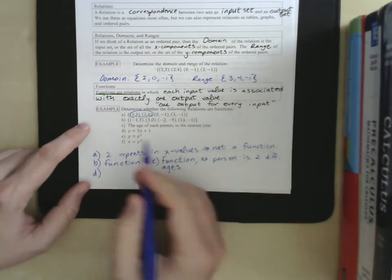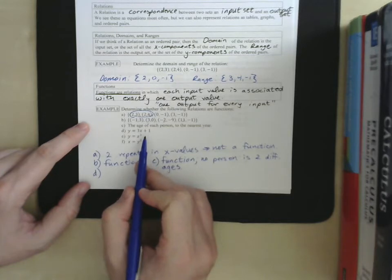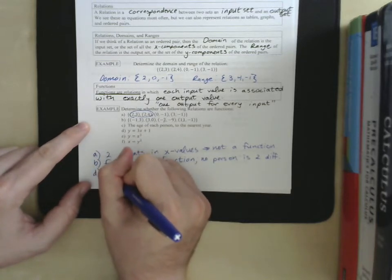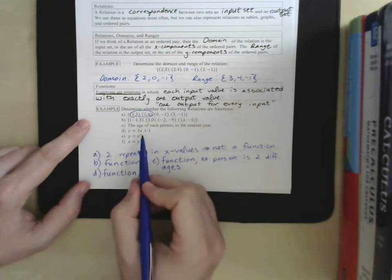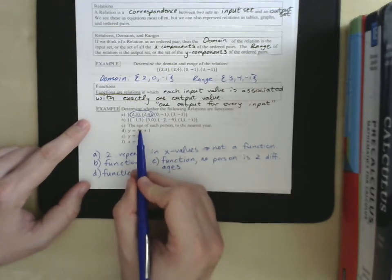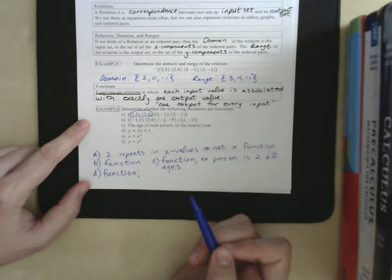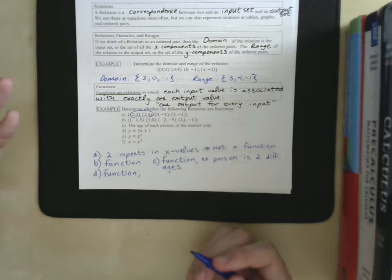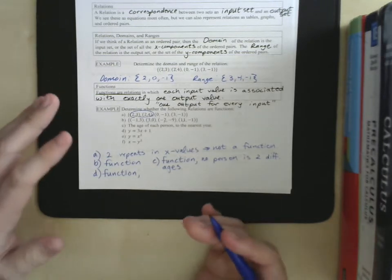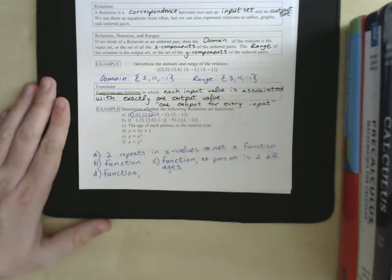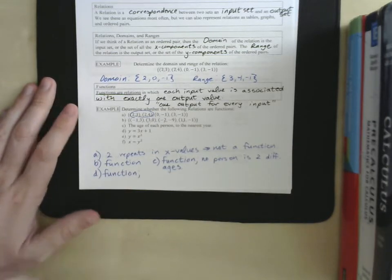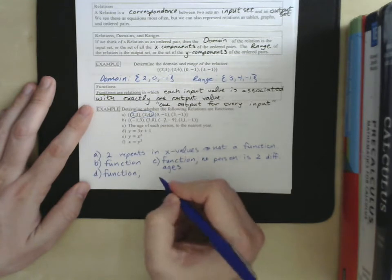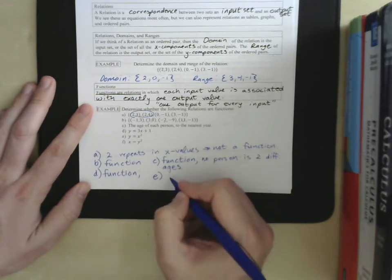Okay, looking at D, Y equals 3X plus 1. This is also a function. And the reason for that is there is going to be no number that you can plug in here that gives you two answers. 3X plus 1 will never be anything but 3 times that number plus 1. There's no numbers that when you multiply get two answers, there's no numbers when you add 1 you get two answers.